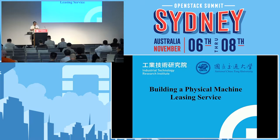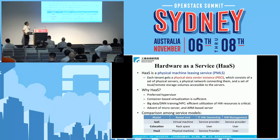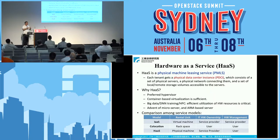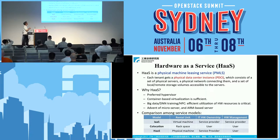Thanks for coming to this last section of the day. My name is Chi Ke Che, I'm from E3 in Taiwan. What I'm going to talk about today is this new service we call physical machine leasing service, also known as HaaS. Some of the talks also use this same term to talk about a service that allows a tenant to rent what we call a physical data center instance — a set of servers, storage volumes, and a physical network connecting them.